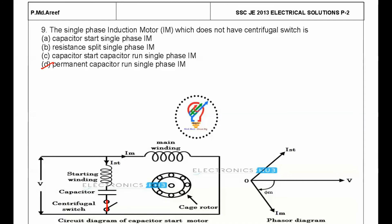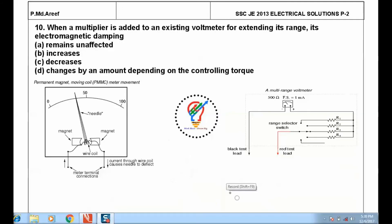Next question: when a multiplier is added to an existing voltmeter for extending its range, its electromagnetic damping is... Here we have a multi-range voltmeter with different resistances. When you're connecting different resistances in series, the voltmeter range can be altered. For extension, the resistance should be more value.